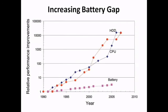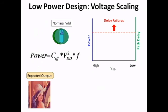The operation of such devices is constrained by the limited battery lifetime, which is not improving as fast as transistor technology. Therefore, there is a need to efficiently utilize the limited energy resources through low power techniques. One of the most effective ways to reduce power is voltage scaling, due to the quadratic dependence of power on voltage.